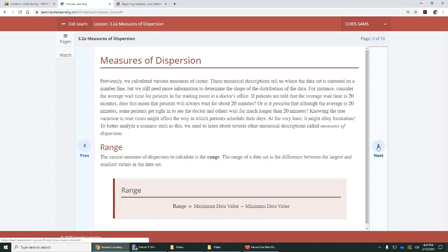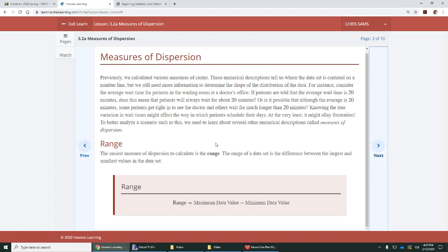I'm going to go through the preview of the things that you need to know, and then we'll start working in Hawks. One of the measures of spread or dispersion is the range. Very simple calculation. You're going to do the biggest value, the maximum, and subtract the smallest value in that order, and that is the range. That tells you how far apart they are.